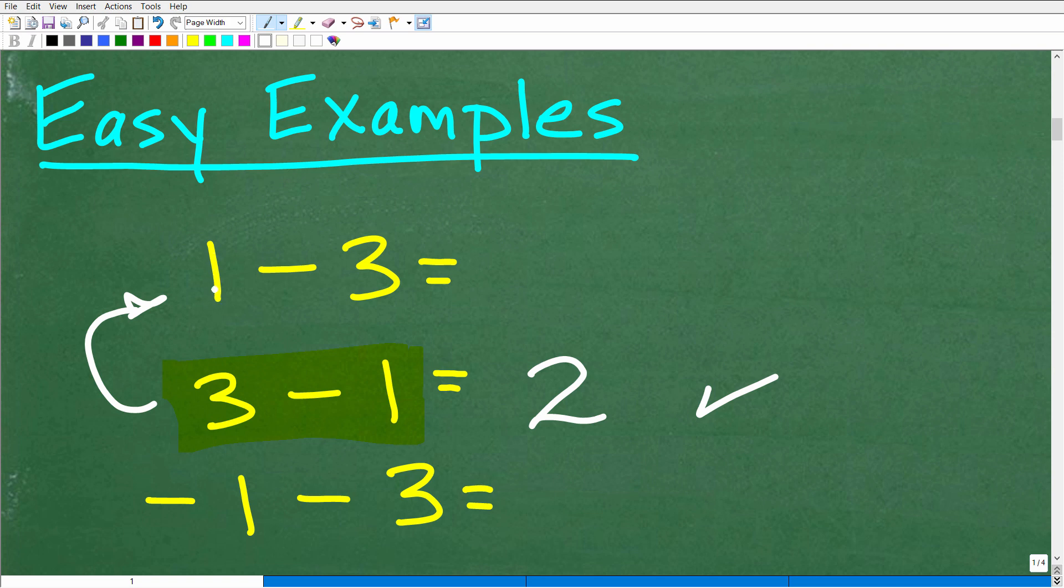But, this is just a quick example. So, here we have 1 minus 3. Well, this 1 is actually a positive 1. So, think of it as you have $1, okay? And then this negative 3, what we want to think about is the following. This is a minus 3. So, in math, what we can do is change this minus sign to a plus negative, right? And this is a big part of what I want to get across in this video.